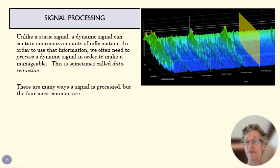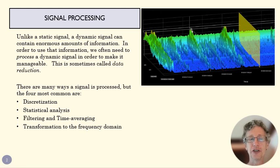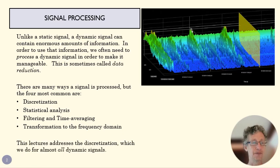Now, we're going to talk about four different ways of processing a signal. There are a bunch of other different ways, but the probably four most common are discretization, turning an analog signal into a discrete signal. Statistical analysis using standard deviation and mean and tools like that on a dynamic signal. Filtering and time averaging to get rid of noise and unnecessary parts of the signal. And then a transformation to a frequency domain in which we kind of break a signal down and talk about it in terms of what makes up that signal, what things are added together to get that complex signal. This lecture addresses discretization, which we do for almost all dynamic signals. It's very difficult to deal with analog signals, and so we almost always discretize them.